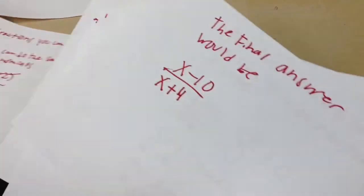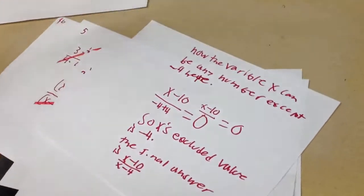And so our final answer would be x minus 10 over x plus 4. And the variable x can be any number.